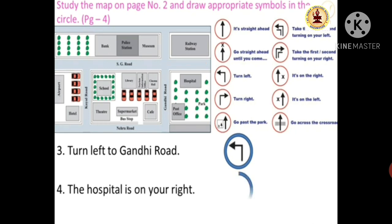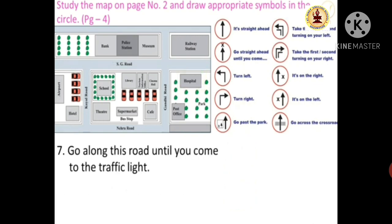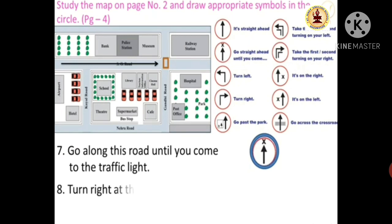Fourth one: the hospital is on your right. Third one: go along the road until you come to the traffic light. If you don't have a traffic light, you will go back to the traffic light. Second number: turn right at the post office.